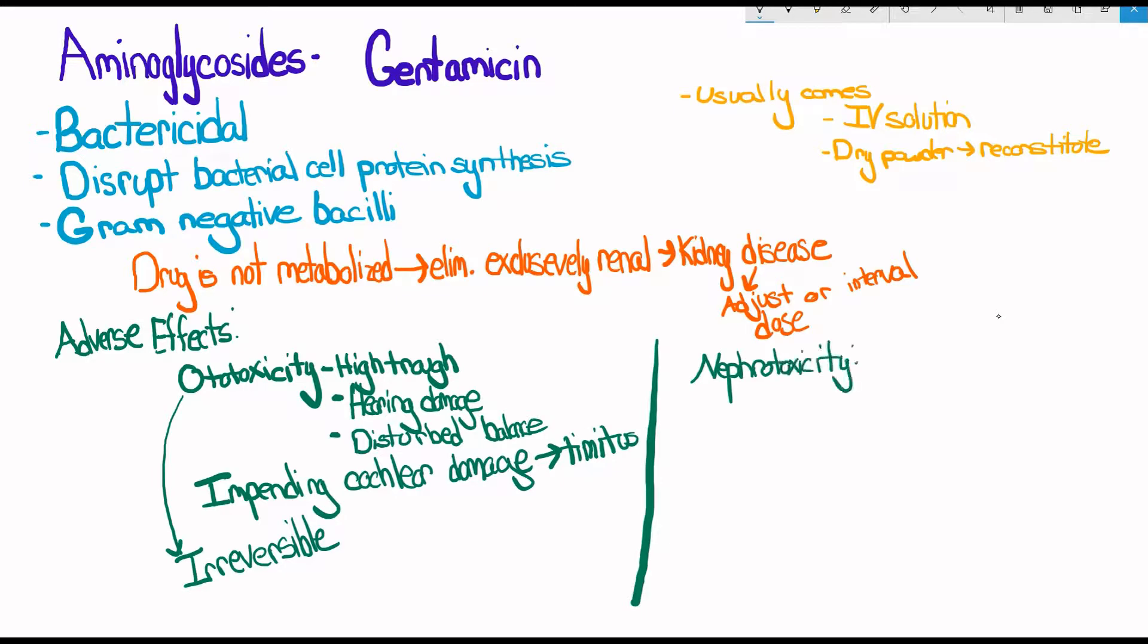Gentamicin also causes nephrotoxicity, which is damage to the kidneys. This happens when you have a high trough, so what you want to do is monitor the serum creatinine and the blood urea nitrogen.